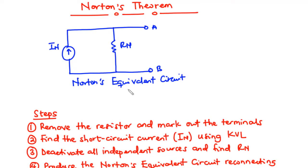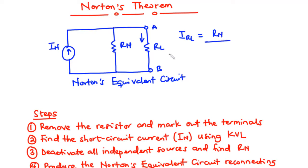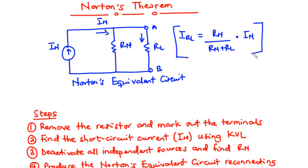Assuming you want to find the current flowing through a particular resistor, you connect that resistor between the two terminals — that is called the load resistor. The current flowing through this load resistor is given by: IL = [Rn / (Rn + RL)] × IN, where IN is the Norton's current approaching that junction. This is how to find the current through the load resistor using Norton's theorem.